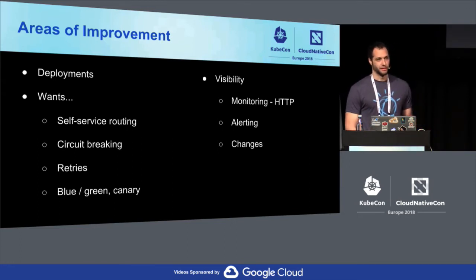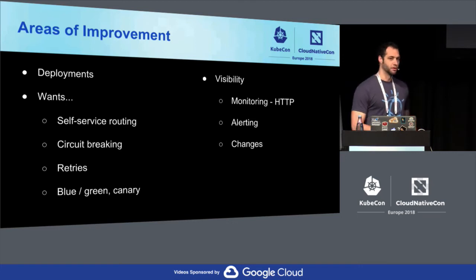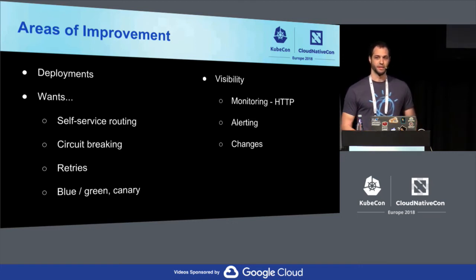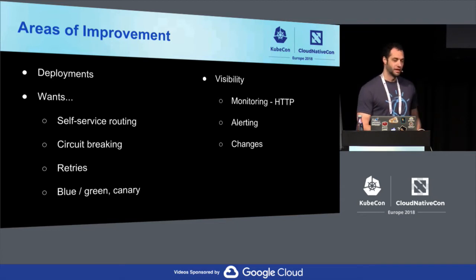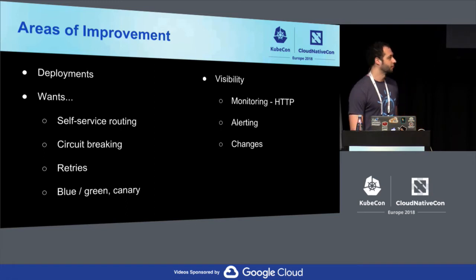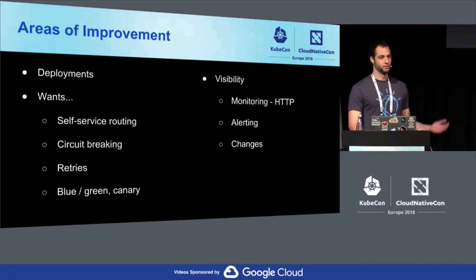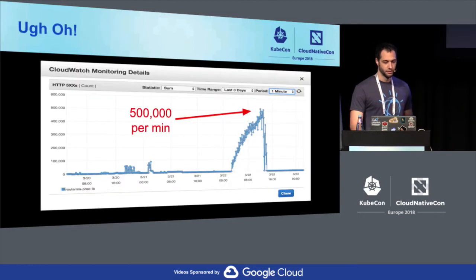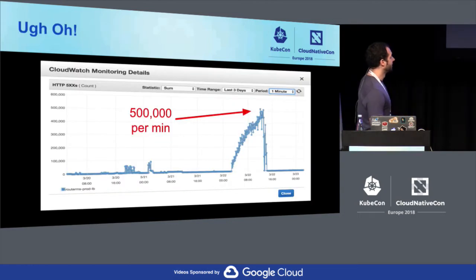Our HTTP monitoring visibility is not great right now. We needed to improve it and alert teams when their APIs are misbehaving. Right now it's a very manual process. We also wanted changes to be very transparent. This brings us to an uh-oh moment we had a couple weeks ago.